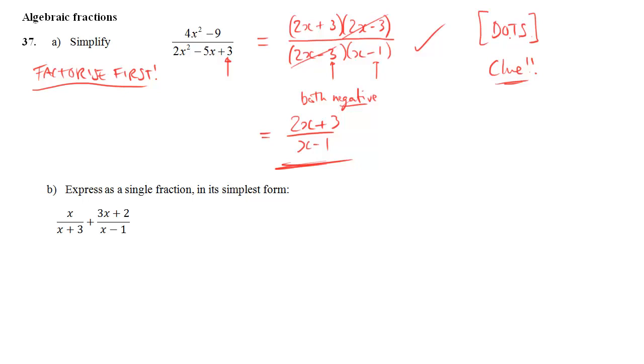OK, part b, expressing as a single fraction in its simplest form. So we need a common denominator here. We can't add fractions unless they have the same denominator. So both denominators have got to include the x plus 3 and the x minus 1. So we'll write that in for the denominator, and the second fraction is going to have to have exactly the same.